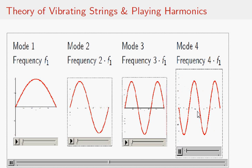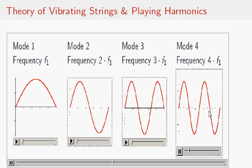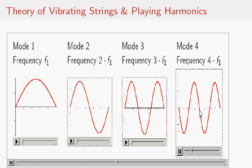For mode 4, there are nodes at a quarter, a half, and three-quarters the string length. Notice that the node at one-half the string length is also a node for mode 2.